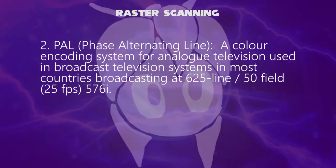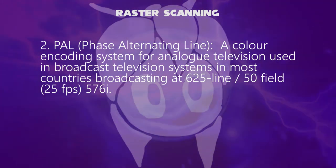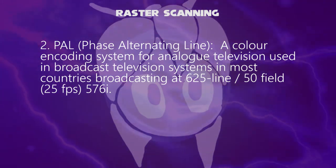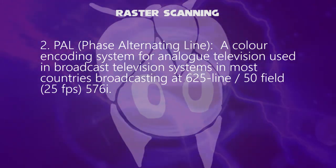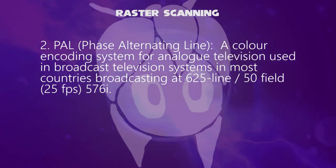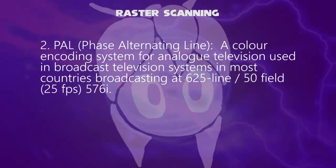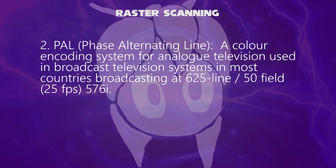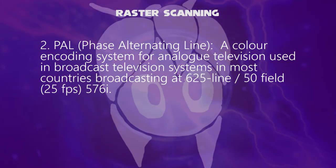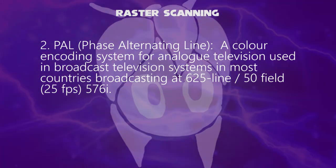Next, PAL, or Phase Alternating Line, is a color encoding system for analog television used in broadcast television systems in most countries, broadcasting at 625 lines by 50 fields, or 25 frames per second.